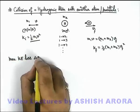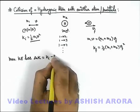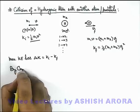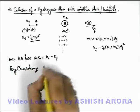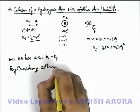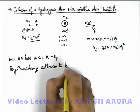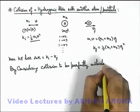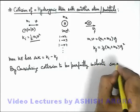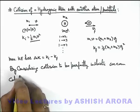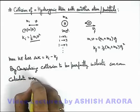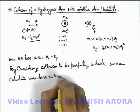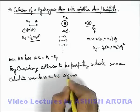In this particular situation, delta K we can write as Ki minus Kf. Here we can say by considering collision to be perfectly inelastic, we can calculate maximum loss in kinetic energy, that is delta K max.